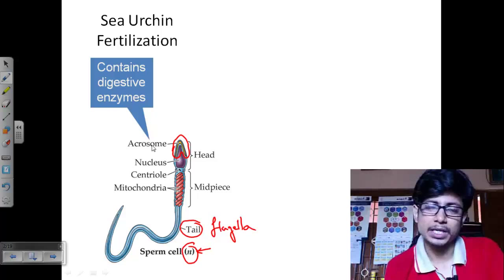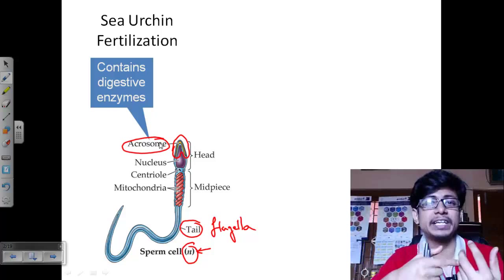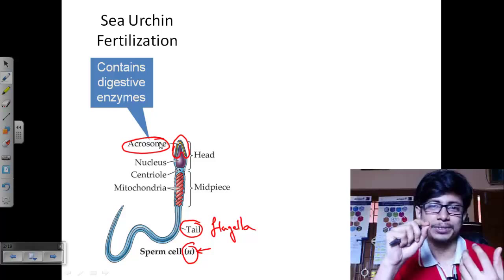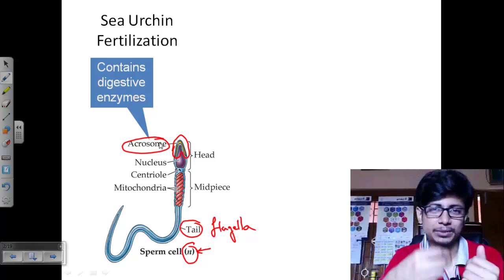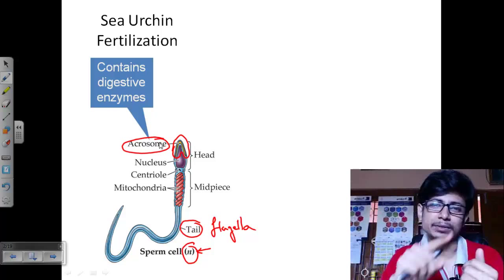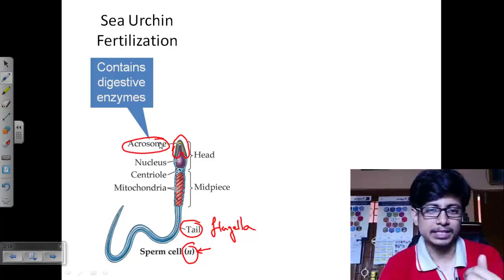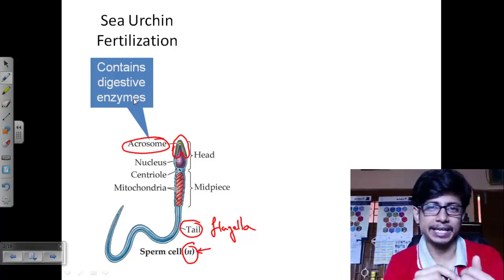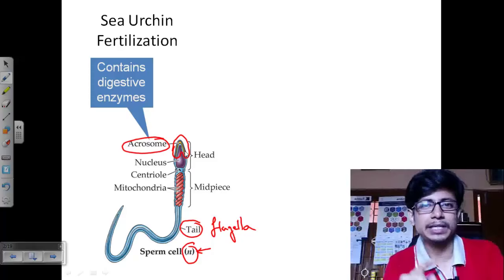The acrosome contains specific digestive enzymes. The whole idea of fertilization is that when the sperm attaches to specific receptors on the surface of the egg cell, the acrosome membrane is disrupted and those digestive agents are released. These digestive agents degrade the outer membrane — called the vitelline membrane — of the egg, and the sperm pronucleus present in the head enters the egg. Then both nuclei — the nucleus of the egg and the sperm — fuse to form the diploid number of chromosomes. This is the fertilization event in sea urchin.